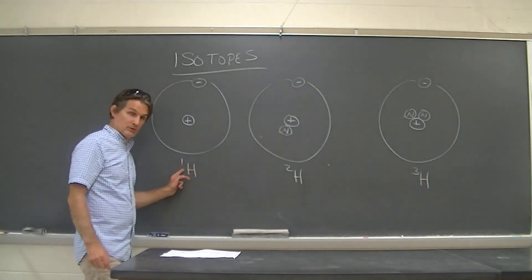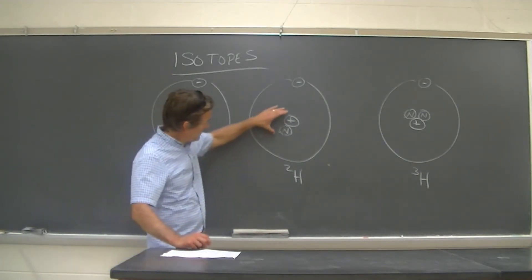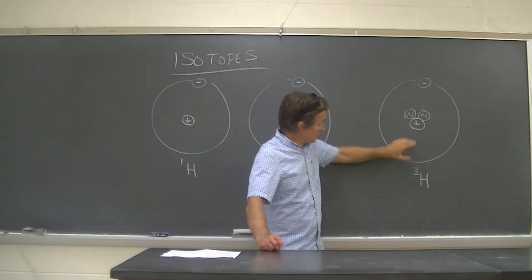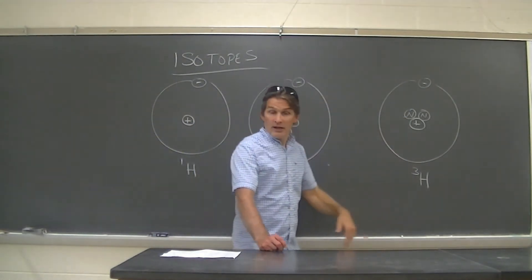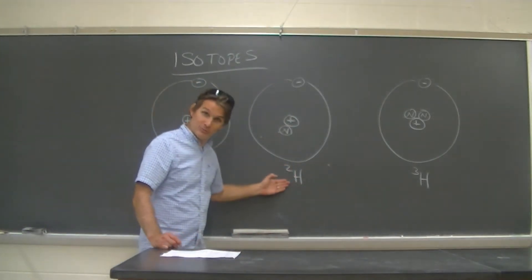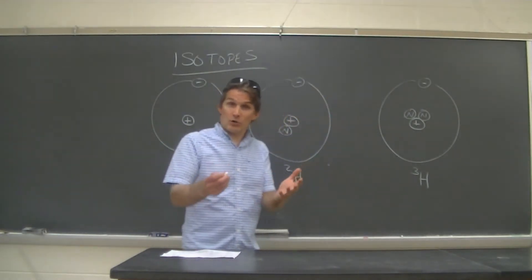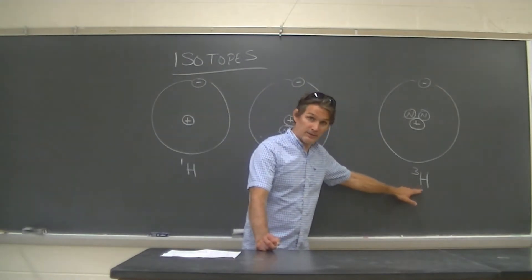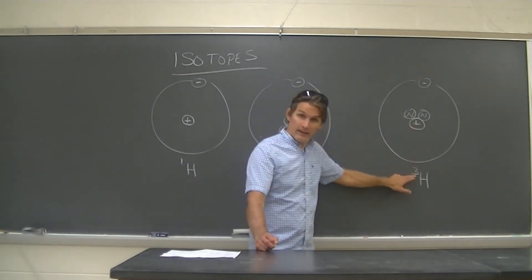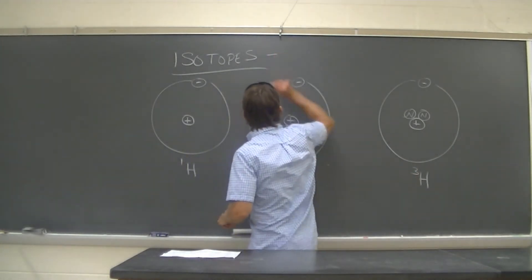The mass number refers to the number of particles in the nucleus. There's one particle in the first nucleus, so its mass number is 1. There are two particles in the second, so mass number 2. Three particles gives mass number 3. So we simply call them hydrogen-1, hydrogen-2, and hydrogen-3. That's how isotopes are named — by the element name plus the mass number.